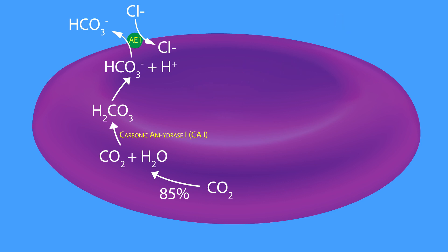Now, the other 10% of the carbon dioxide that diffuses into the red blood cells displaces the oxygen on the oxyhemoglobin to form carboaminohemoglobin.